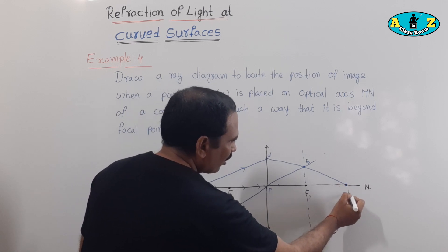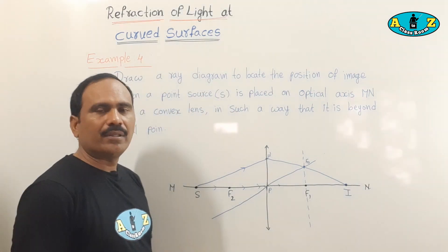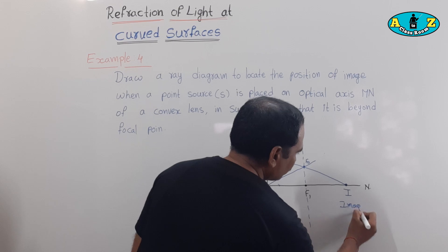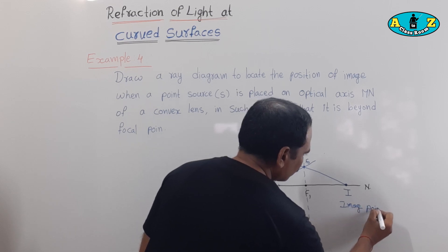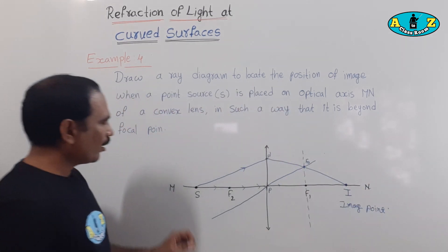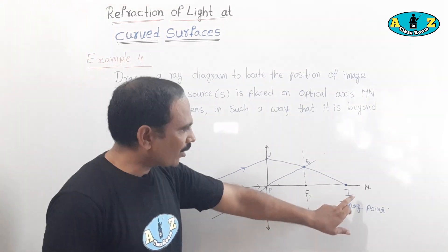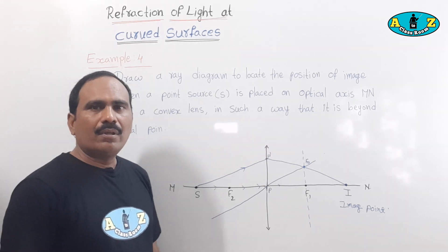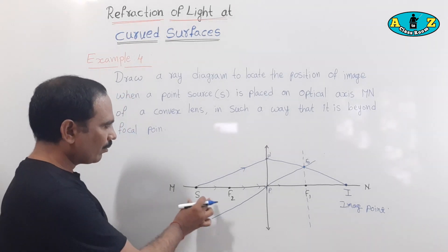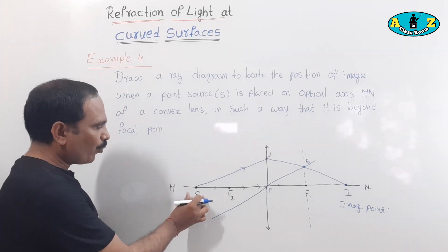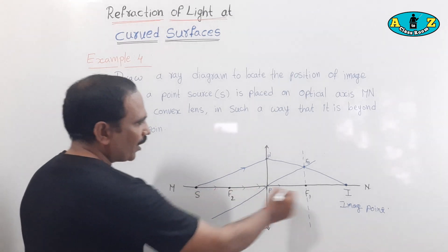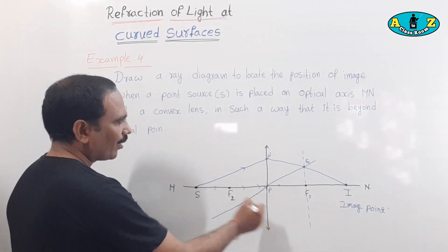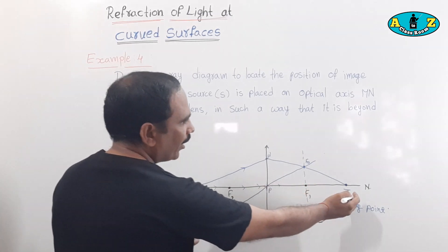That intersection point on the principal axis is the image point, called I. So we are taking a pointed object and getting image point I.